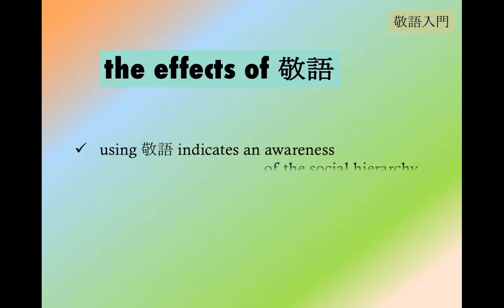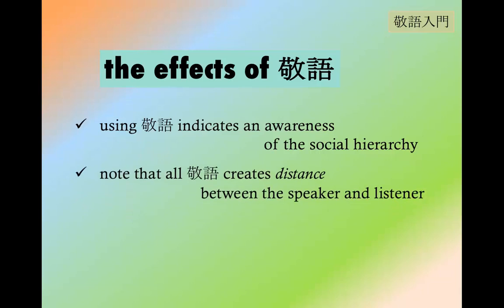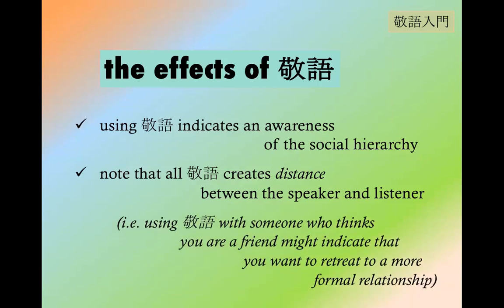In general, Keigo has the effect of indicating your awareness of the social hierarchy. This is important for adults — children don't necessarily use Keigo, but adults are expected to know when it's appropriate and how to differentiate social status, whether it's by age, whether you're entertaining a customer, or talking to a boss or underling. Keigo creates distance between the speaker and the listener, so it's used in formal settings, not casual ones. If you suddenly use Keigo with someone who thinks you're a friend, it indicates you want a more formal relationship.